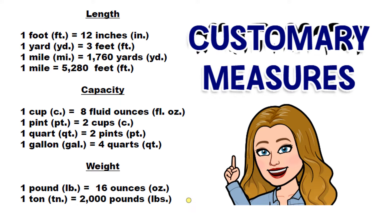Another thing you'll need to do is know which unit is bigger than the other. The chart I provided starts out small and gets bigger — we have inches and feet, ending with a mile. For capacity, we start with ounces and go up to a gallon. For weight, we go from ounces up to tons. Knowing which units are bigger will help you understand how to convert measurements.